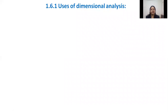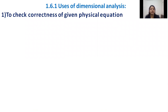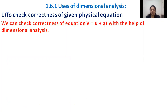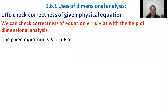Now let us see the uses of dimensional analysis. The first important use is to check the correctness of any given physical equation. If a physical equation is given, we check it using dimensional analysis. For example, consider the equation v equals u plus at from the laws of motion. We will check this equation using dimensional analysis.